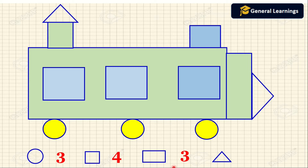Now we are going to count the number of triangles: one, two. The number of triangles present in this picture is two.